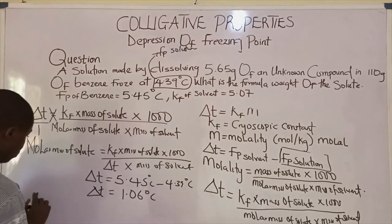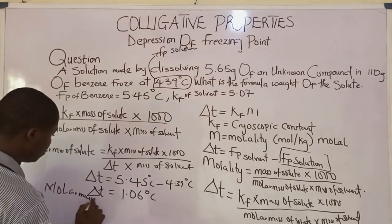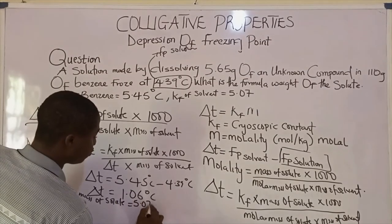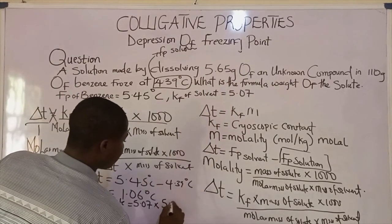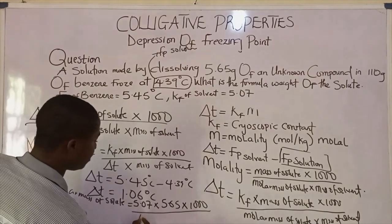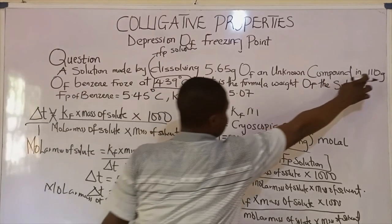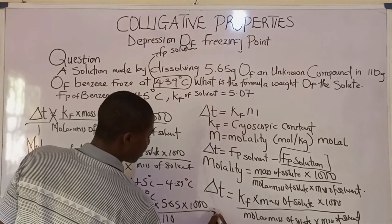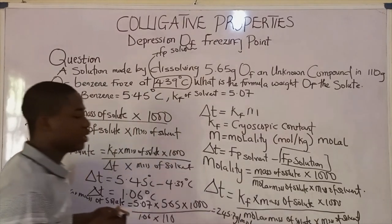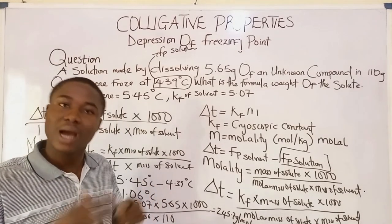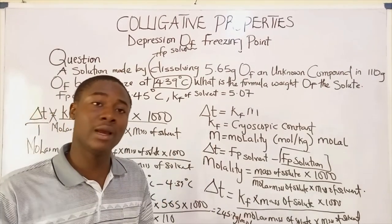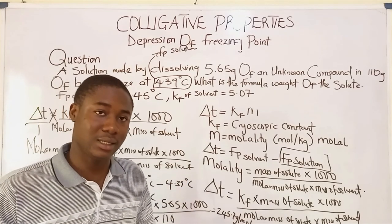So the molar mass of solute equals Kf times mass of solute times 1,000, all over delta t times mass of solvent, which is 5.07 times 5.65 times 1,000, all over 1.06 times 110. This gives a molar mass of 245.7 grams per mole. You can see how questions on depression of freezing point are tackled. Do subscribe to this channel and share these videos with your friends — chemistry is made easy. Thanks for watching.